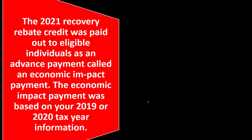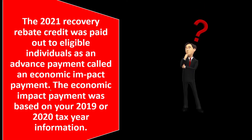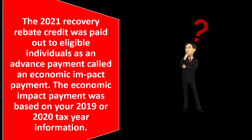The 2021 recovery rebate credit was put out to eligible individuals as an advanced payment called an economic impact payment — also known as the stimulus payment. We're looking at the third one. It would have been nicer if they'd called it an 'advanced recovery rebate credit,' which would have told you it was an advanced payment. But instead it's the economic impact payment, which is an advanced payment of the recovery rebate credit.